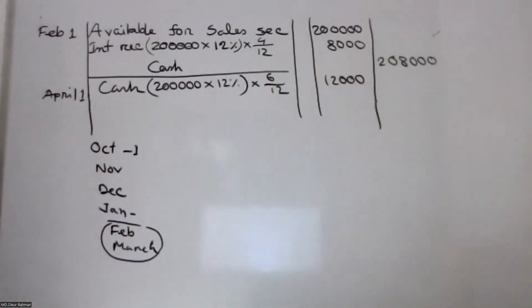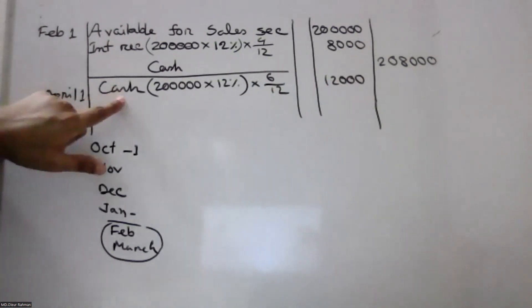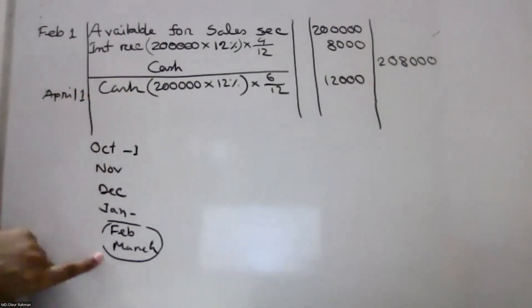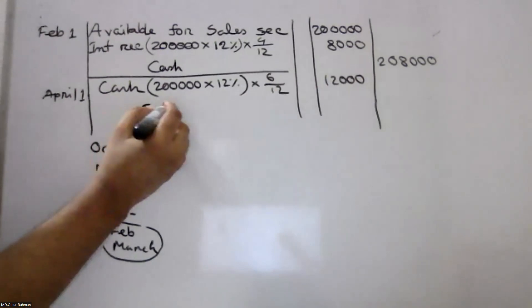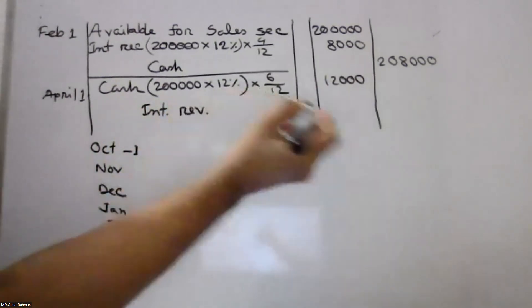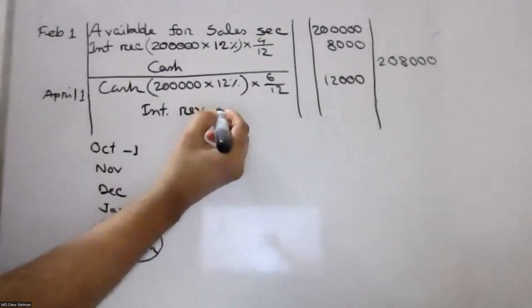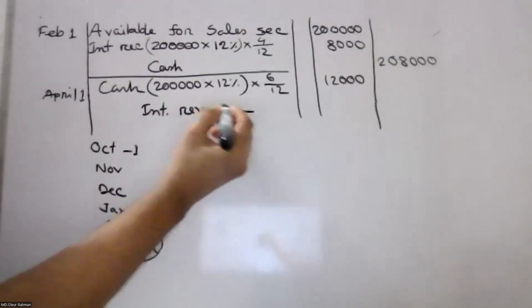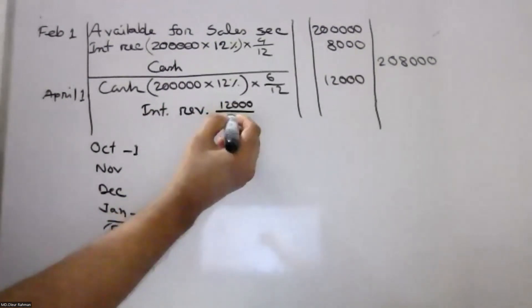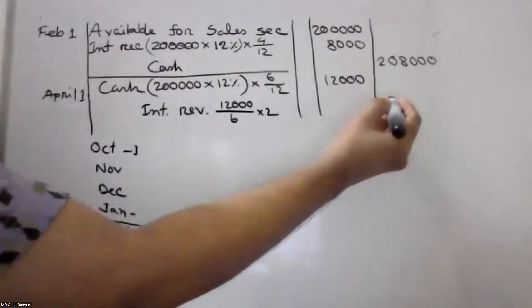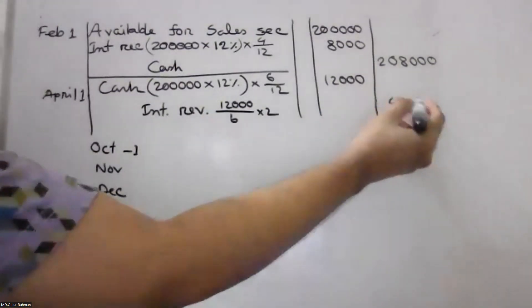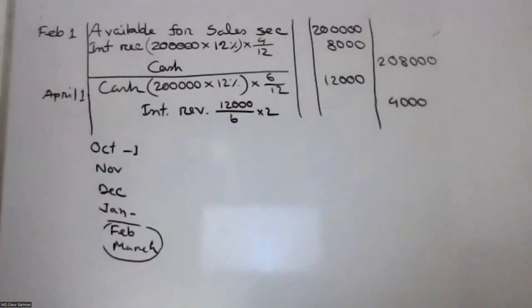12,000? No. Interest revenue — 2,000? 12,000? 4,000? Calculating the interest figures for the bond.